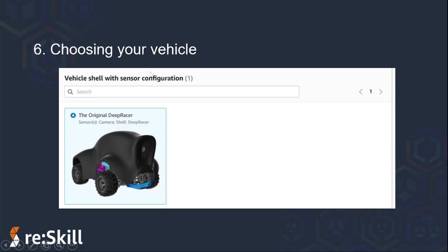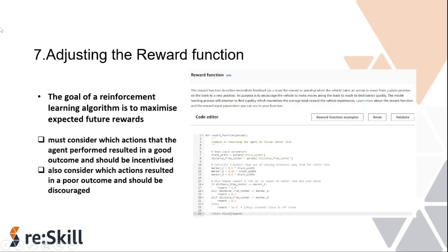The sixth step is to choose a vehicle. The first time you create an AWS DeepRacer model, you will only see the original DeepRacer vehicle, as I showed you in the console. As you create models and compete in the AWS DeepRacer League, you can earn more virtual cars. For each new model, you can choose from your list of vehicles. Next, adjusting the reward function: the goal of a reinforcement learning algorithm is to maximize the expected future rewards. To achieve this long-term success, you must consider which actions the agent performs result in a good outcome and should be incentivized, and which actions result in a poor outcome and should be discouraged. The reward function is where you can experiment with these factors and apply them to your model.